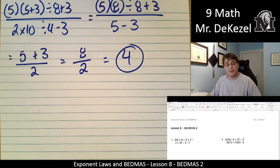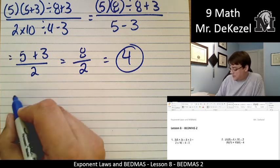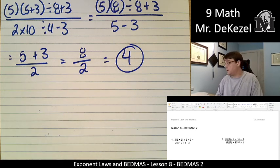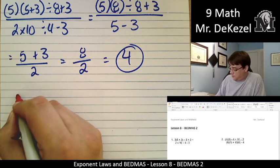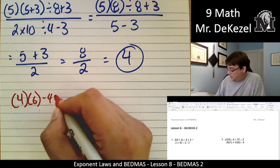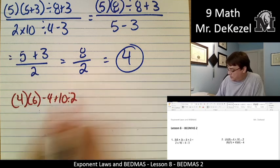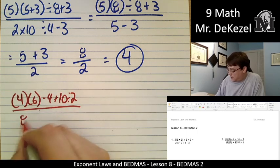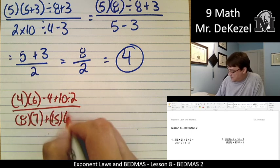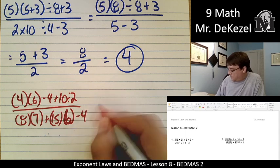Again, we come up with an answer. We may be left with a fraction sometimes, and that is all right. Let's go to the next one. We'll see if I can fit it here. I'm going to change colors just for fun. Let's do (4 multiplied by 6) minus 4 plus (10 divided by 2) all over (8 times 7) plus (15 times 6) minus 4.